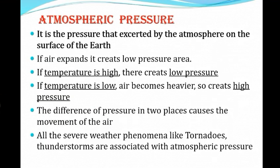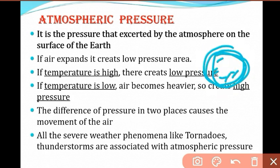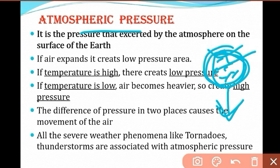The next element is atmospheric pressure, which is a very important factor. Temperature is the main cause of atmospheric pressure changes. Atmospheric pressure is the pressure exerted by the atmosphere on the surface of the earth. A parcel of air has some weight, and that weight creates pressure on the earth's surface — this is called atmospheric pressure.